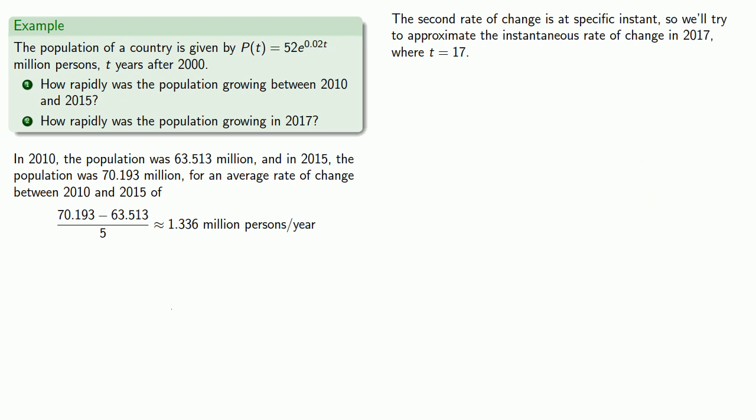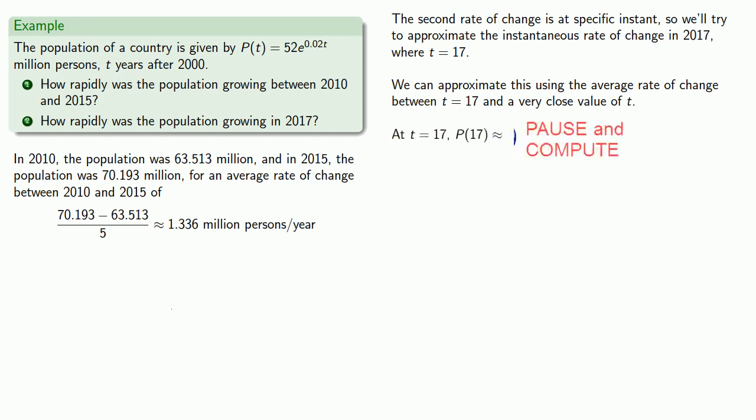We can approximate this using an average rate of change between t = 17 and a very close-by value of t. We find the population at t = 17, then use a close-by value of t, maybe 17.001, and find the population at t = 17.001.